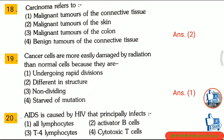Question 20: AIDS is caused by HIV, which principally affects — first, all lymphocytes; second, activated B cells; third, T4 lymphocytes; fourth, cytotoxic T cells. The correct answer is option 3: T4 lymphocytes.